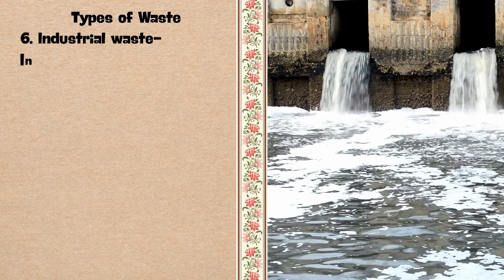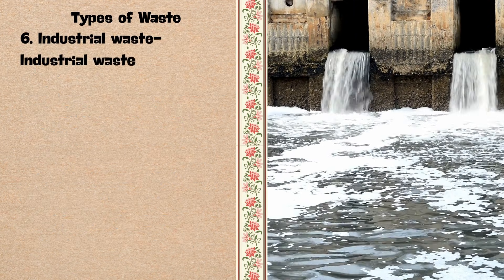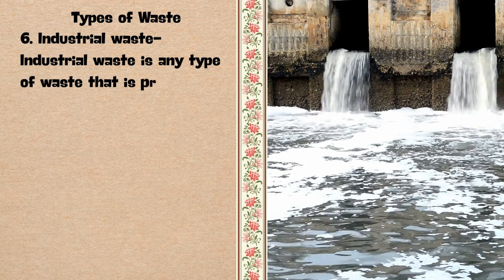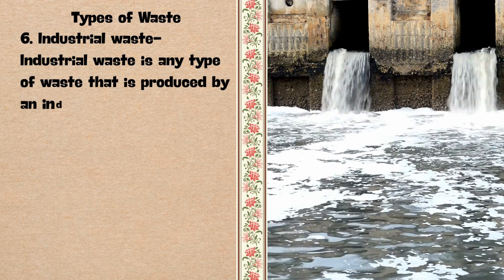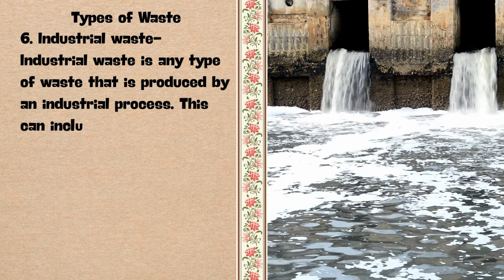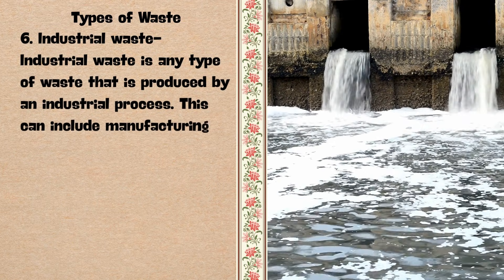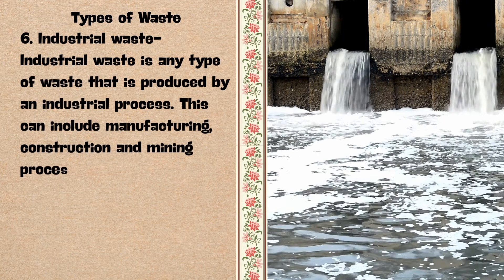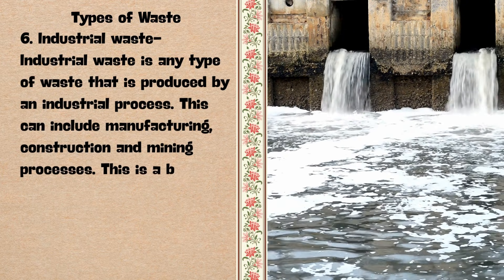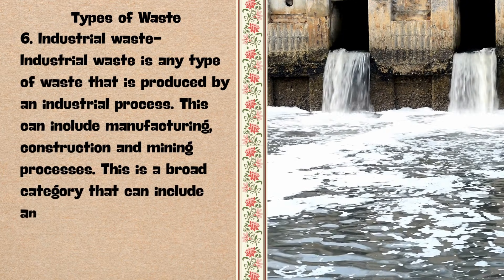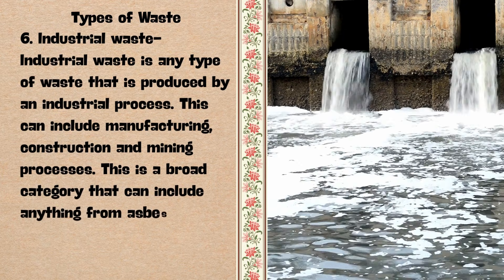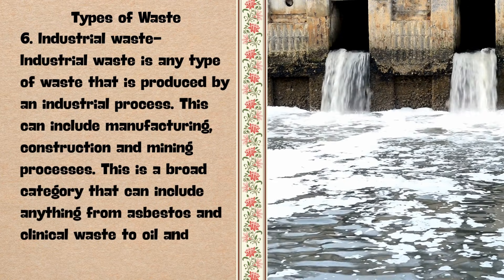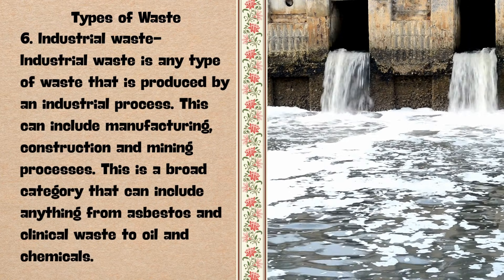6. Industrial waste — it is any type of waste produced by an industrial process. This can include manufacturing, construction, and mining processes. It is a broad category that can include anything from asbestos and clinical waste to oil and chemicals.